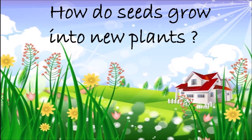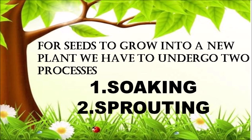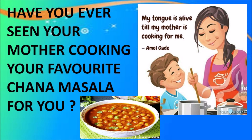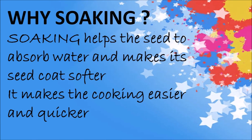Now that we have learnt about what is inside a seed, let's understand how seeds grow into new plants. For seeds to grow into a new plant, they have to undergo two important processes: soaking and sprouting. Have you ever seen your mother cooking your favorite chana masala? The first thing she does is soak the chana or gram overnight in water. Soaking means keeping the seeds in water for some time. Soaking helps the seed to absorb water, makes its seed coat softer, and makes the cooking easier and quicker.